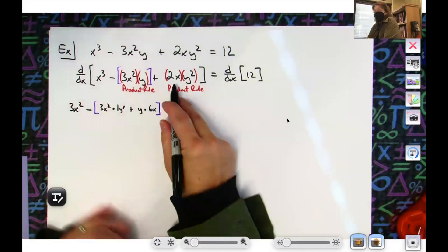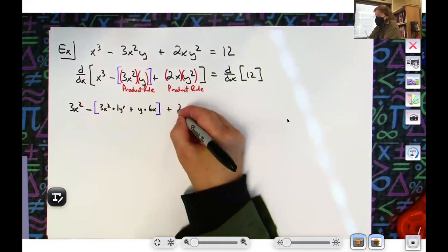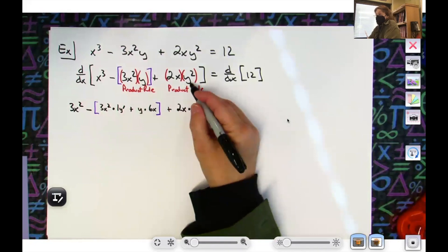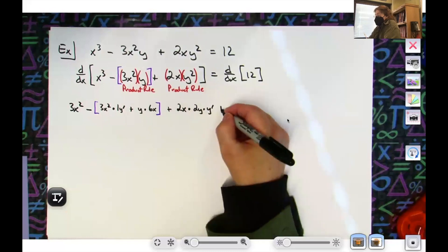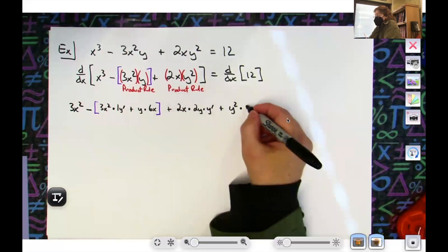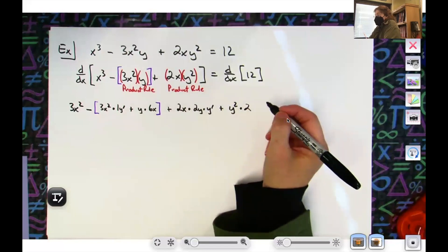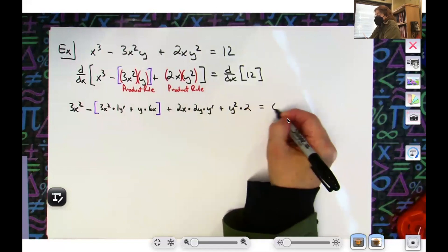Now we're going to do it again here. The first term, 2x, times the derivative of the second, and it's a y, right? So derivative there is going to be 2y, and then remember to slap in the chain, plus the second term y² times the derivative of the first term which is just a 2. And then equals derivative of 12 which is just 0.